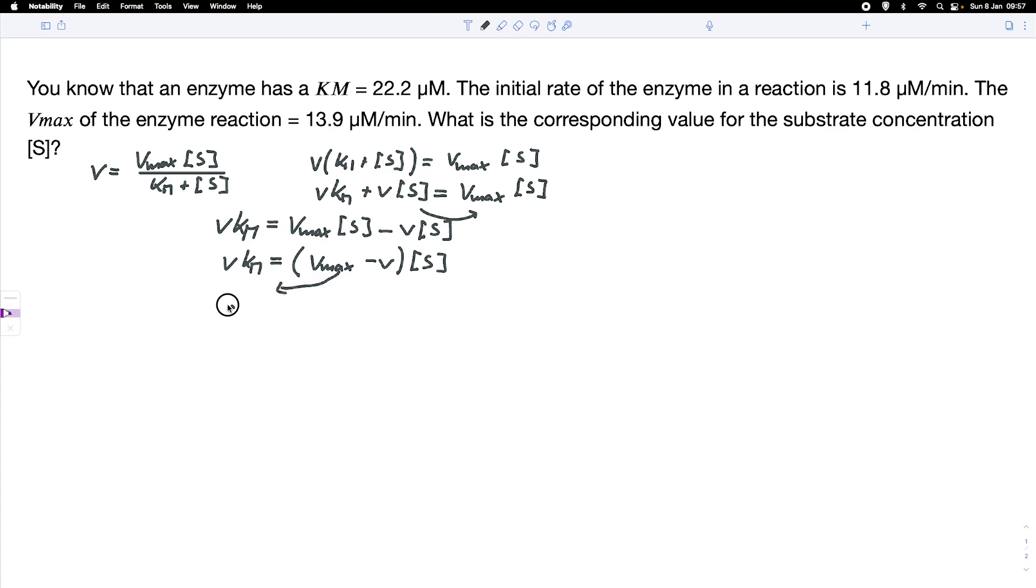And we get the substrate concentration equals V times KM divided by Vmax minus V. So that would be the equation that we can use here, just simply rearranged from the Michaelis-Menten equation.